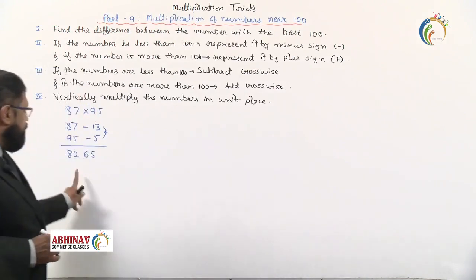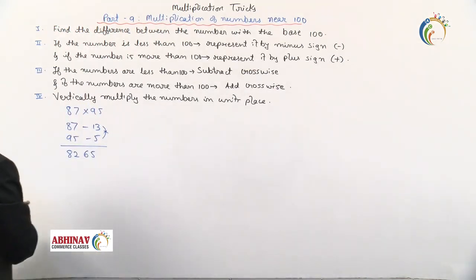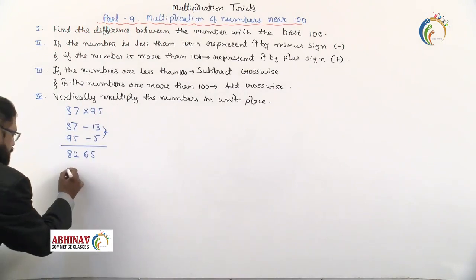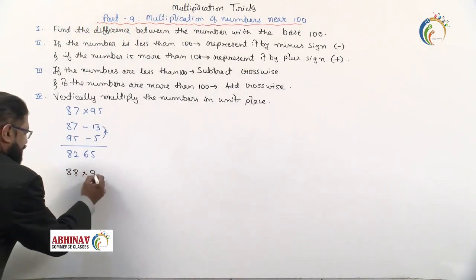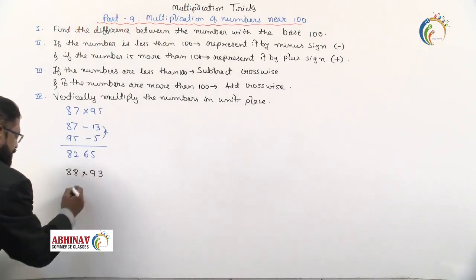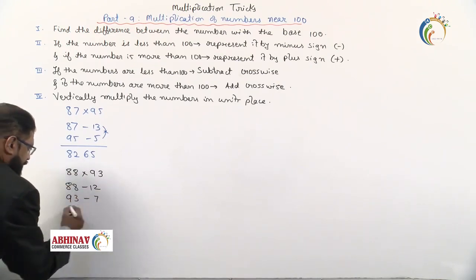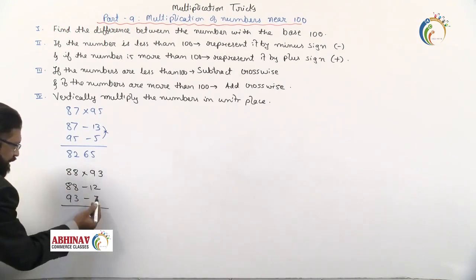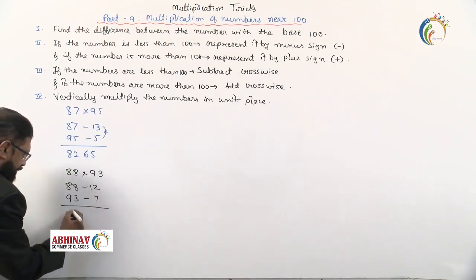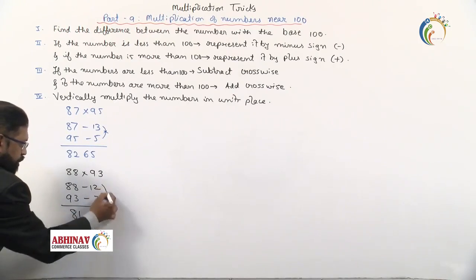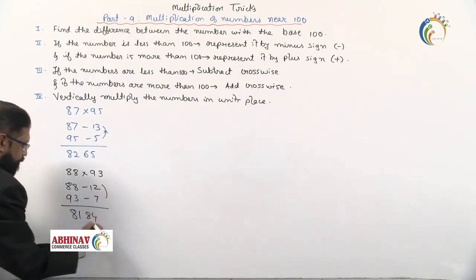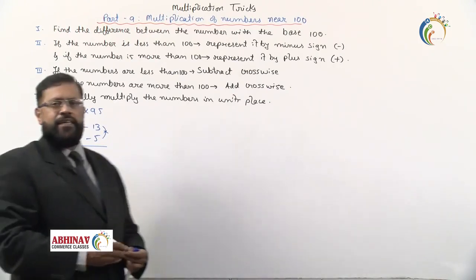Next example: 88 times 93. 88 is 12 less, 93 is 7 less. So 88 minus 7 equals 81, and 93 minus 12 equals 81. Then 12 times 7 equals 84. The answer is 8184.